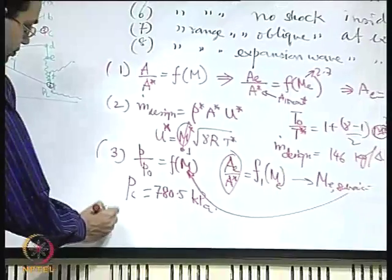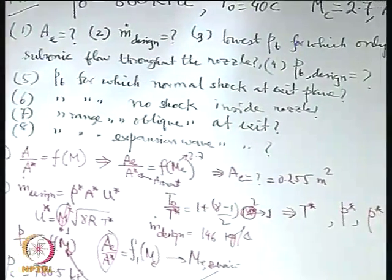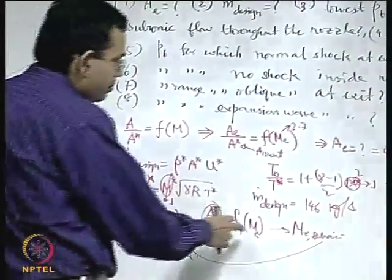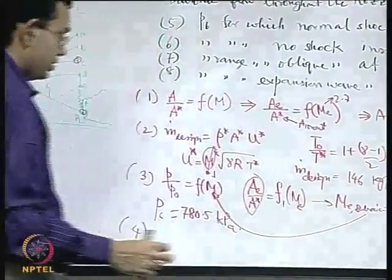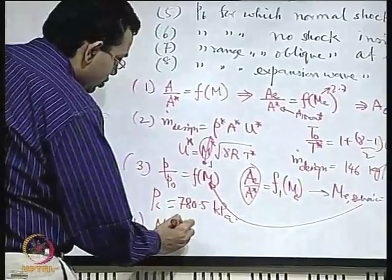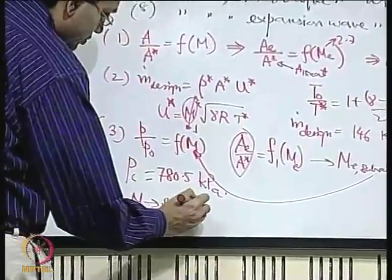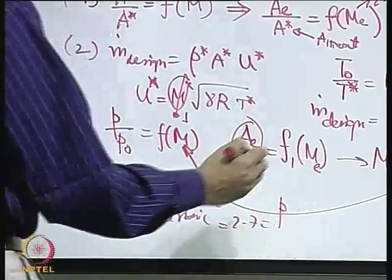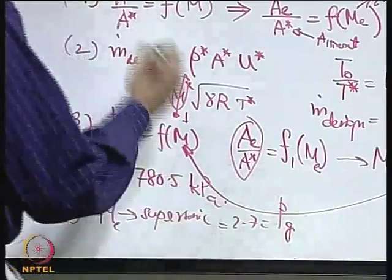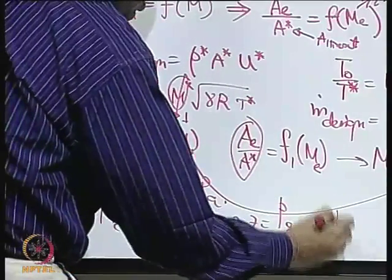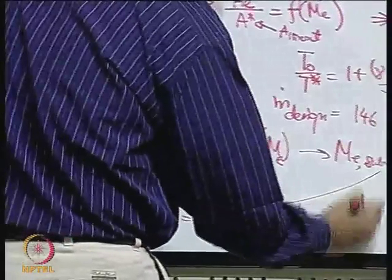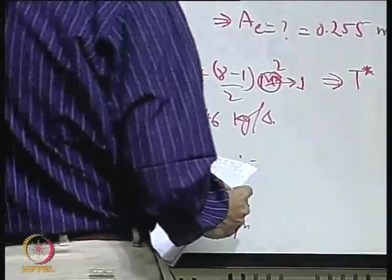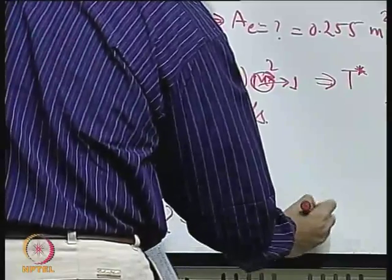Part 4: what is the design back pressure? The design back pressure is calculated the same way as part 3, but using the supersonic solution M = 2.7. This corresponds to point G in the figure. From that, the design back pressure P_G is evaluated as 34.4 kilo Pascal.